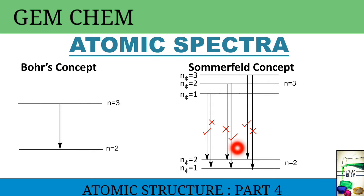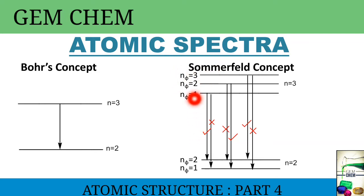Specifically, the difference is one. And for the last case, N-phi equal to three of N equal to three transitions to N-phi equal to two — the difference is also plus or minus one, so it is allowed. Whereas N-phi equal to three to N-phi equal to one gives a difference of two, so it is not allowed. This is basically the atomic spectra as understood from both the Bohr concept and Sommerfeld concept. Bohr had the drawback of seeing multiple lines but not being able to explain them, whereas Sommerfeld is able to explain the concept of multiple lines.